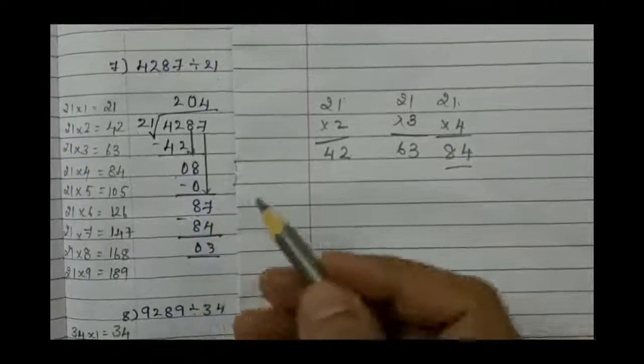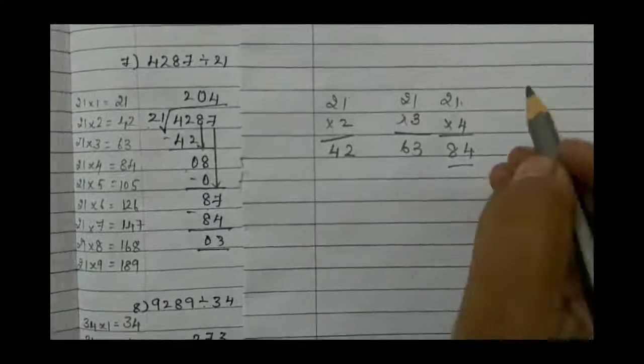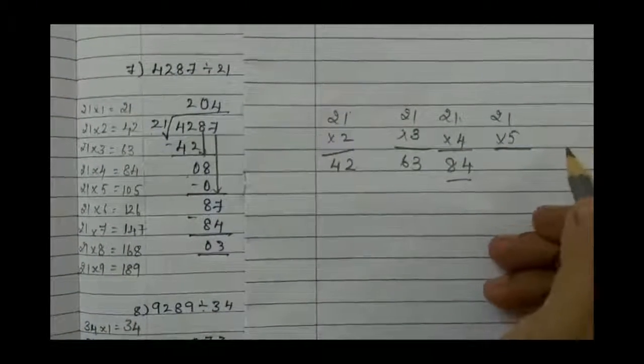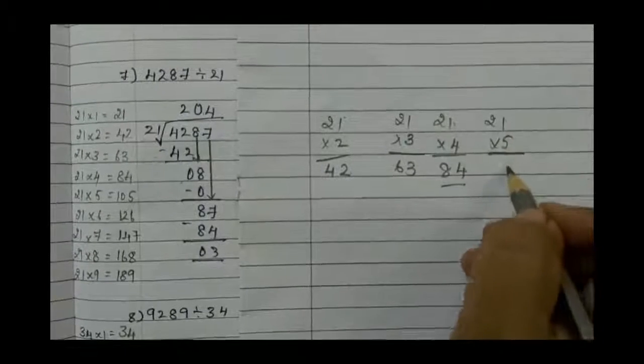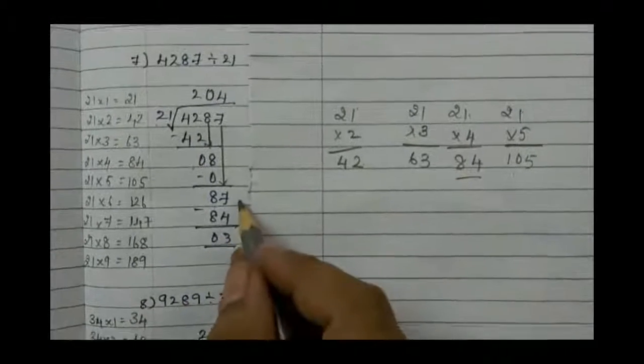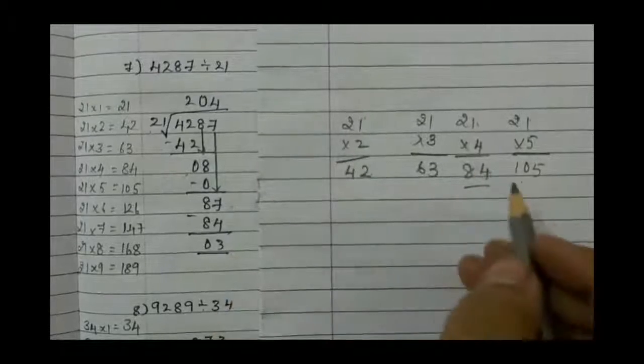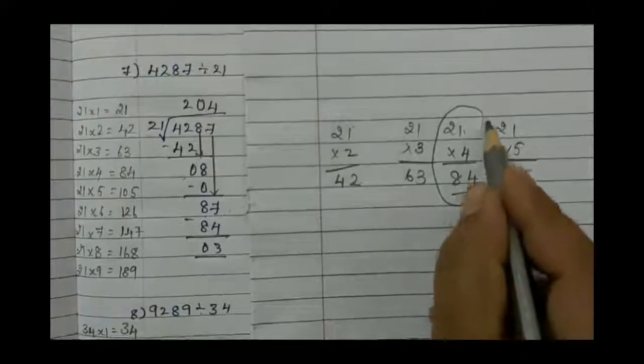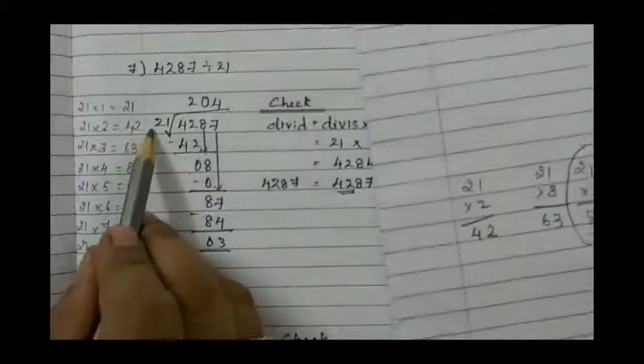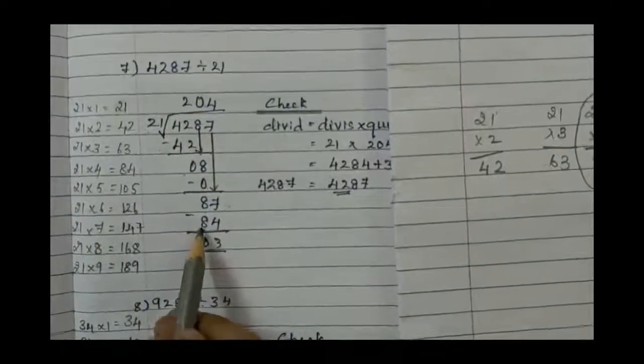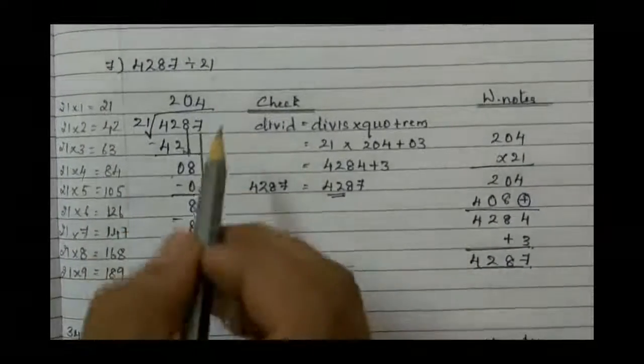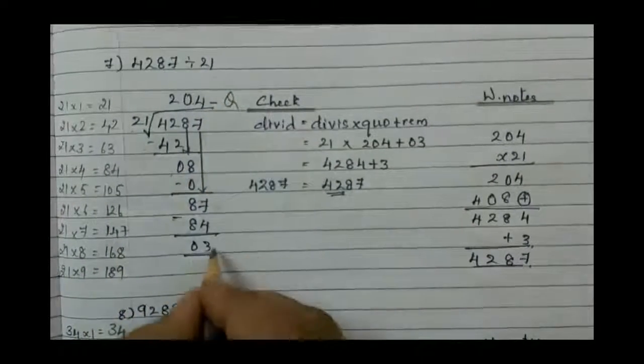Let's check 21 into 5. 5 times 1 is 5, 5 times 2 is 10—that's 105, more than 87. So which one to choose? By 4. 21 into 4 is 84. Go for division: 21 into 4, write down the answer, minus 84. If you subtract: 7 minus 4 is 3, 8 minus 8 is 0. We got quotient and remainder 3.